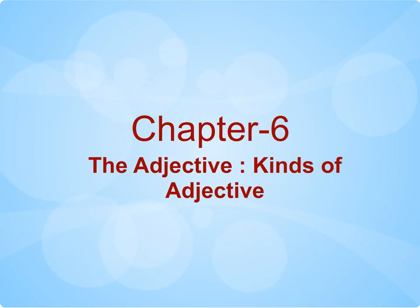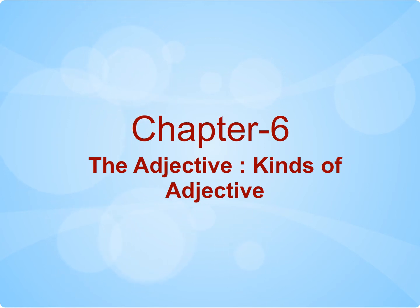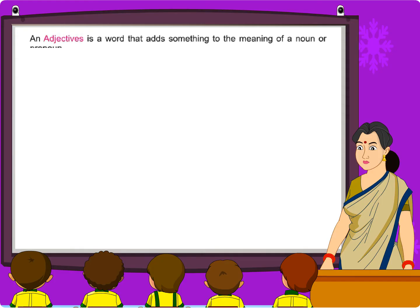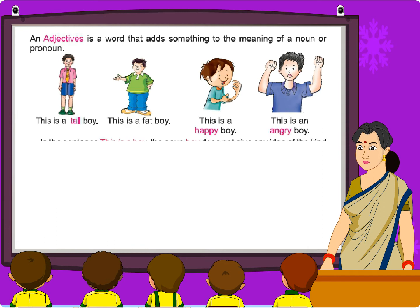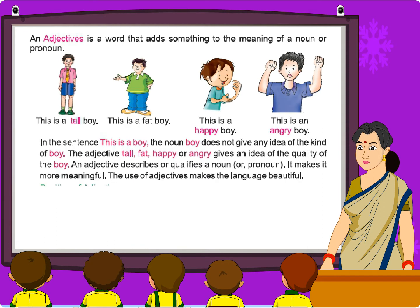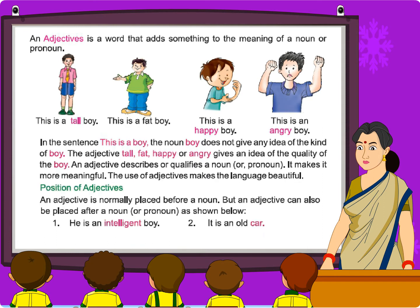Chapter 6: The Adjective. Kinds of Adjectives. An adjective is a word that adds something to the meaning of a noun or pronoun.